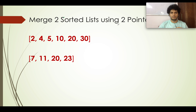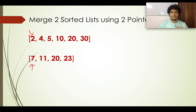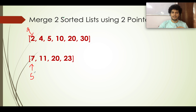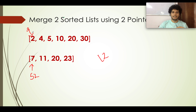Now let me explain the other part of the question: merging of two sorted lists using a two-pointer approach. You have two lists sorted in nature and you want to create a third list containing all elements in sorted order, so you don't have to re-sort. You have a start pointer S1 for the first list and S2 for the second list. You choose the minimum of the two — in this case 2 — and add it to your result array, then increment S1.